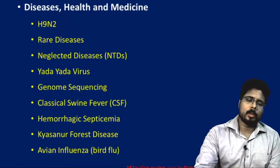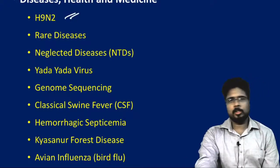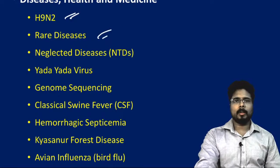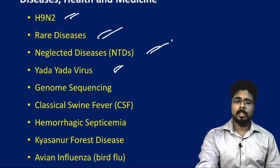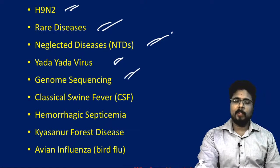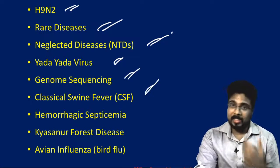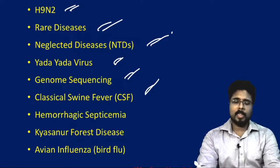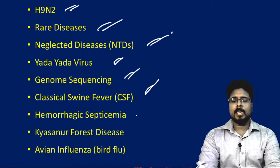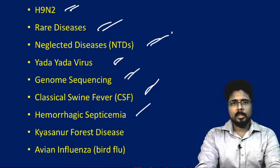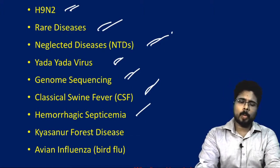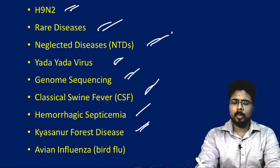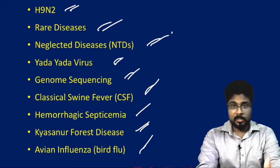The contents for this lecture will be: first, we will talk about H9N2 — what is this H9N2 all about. After that, we will talk about rare diseases, neglected tropical diseases, the yada yada virus, genome sequencing, classical swine flu fever, hemorrhagic septicemia, Kyasanur forest disease, and finally avian influenza, which is bird flu.